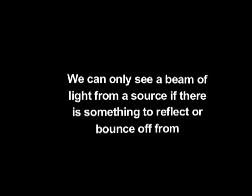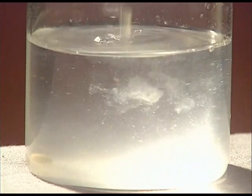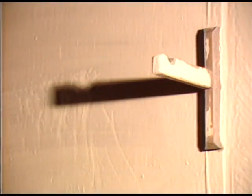Light allows us to see things, but we cannot see the passage of light from the source. We can only see a beam of light from a source if there is something to reflect or bounce off from – dust particles, smoke, haze and objects.